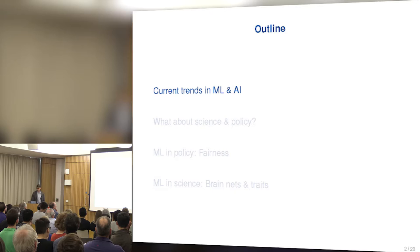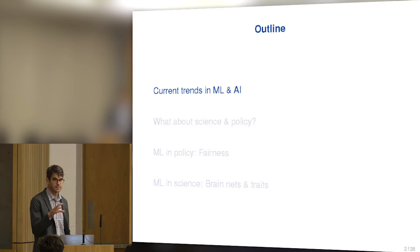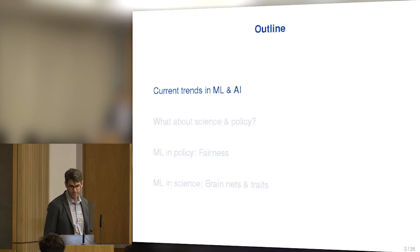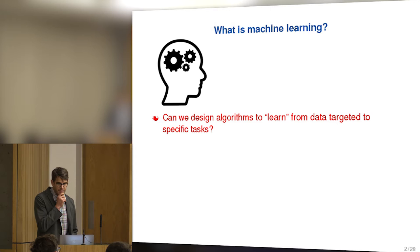I'm going to start out talking, from my biased perspective, about current trends in machine learning and what people call AI. Then I'll talk about how we can develop methods for science, whereas most of the machine learning and AI focus has really been on tech industry type applications, and also policy making. I'll have a couple of vignettes: one on machine learning in fairness and criminal justice, and the other on machine learning in science for brain networks and traits.